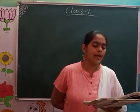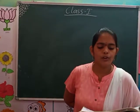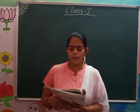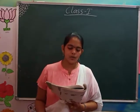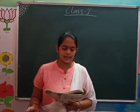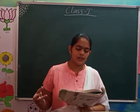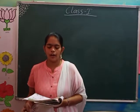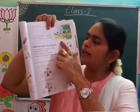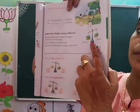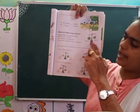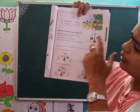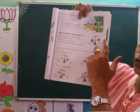Measuring weight using a balance. We use a balance to measure weight. A balance has two pans. We put things on the two pans, and the pan with the heavier thing will go down.